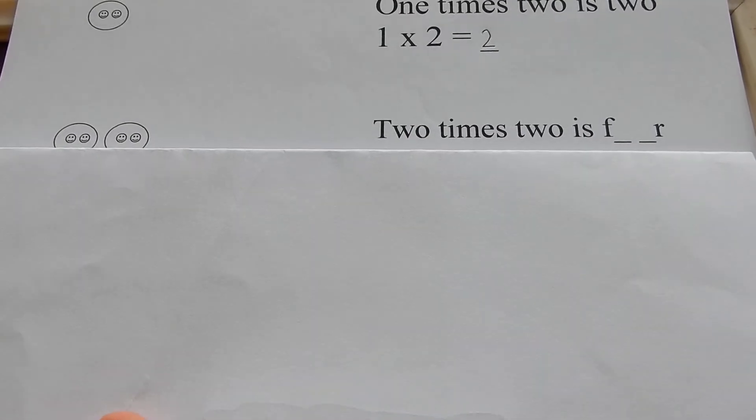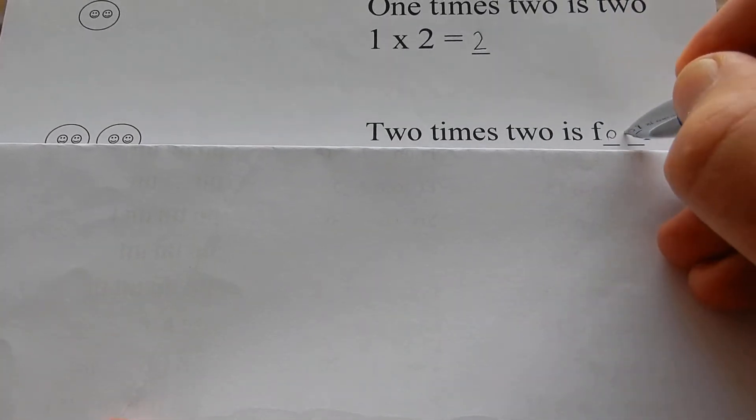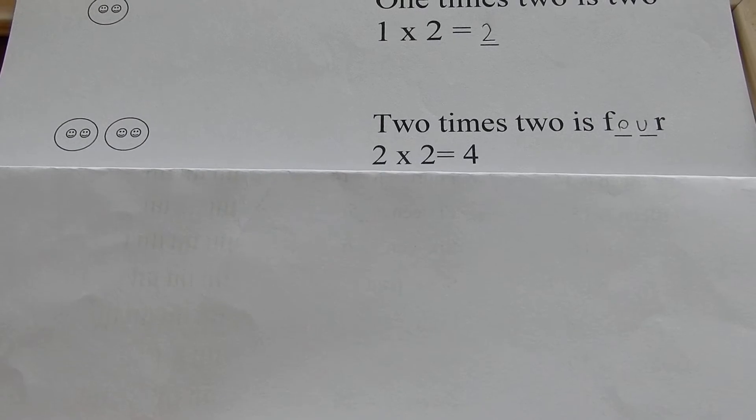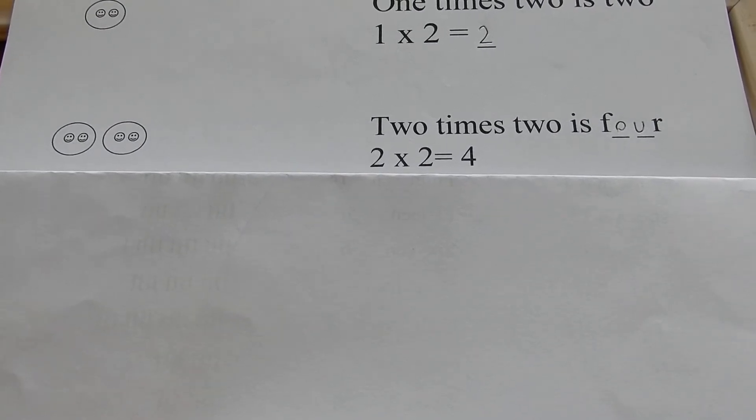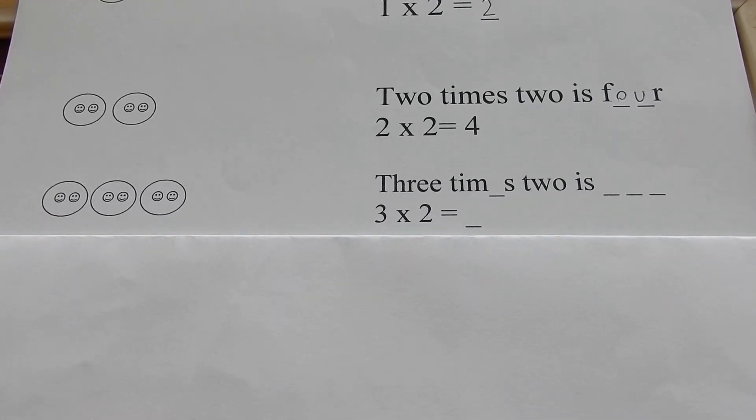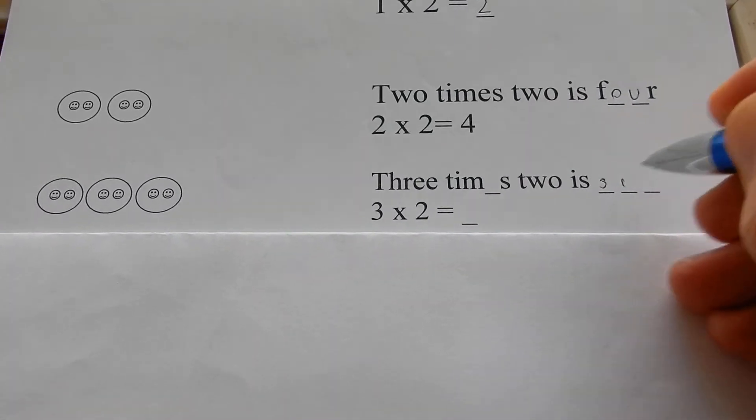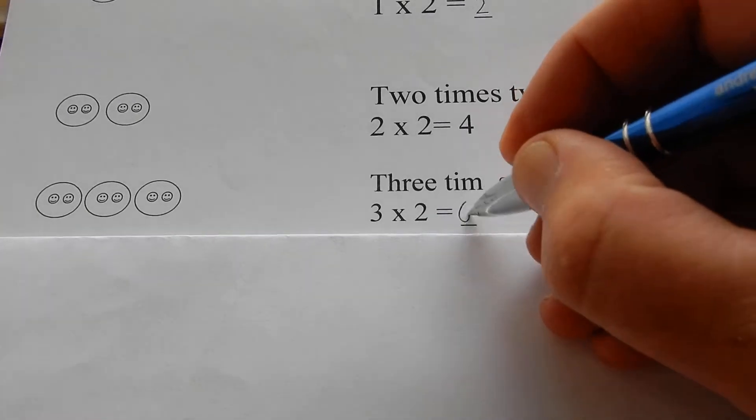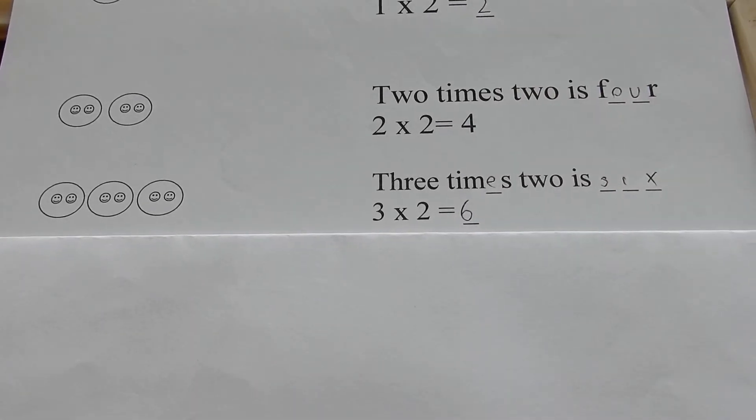Two times two is four. Four faces. Three times two is six. Six faces.